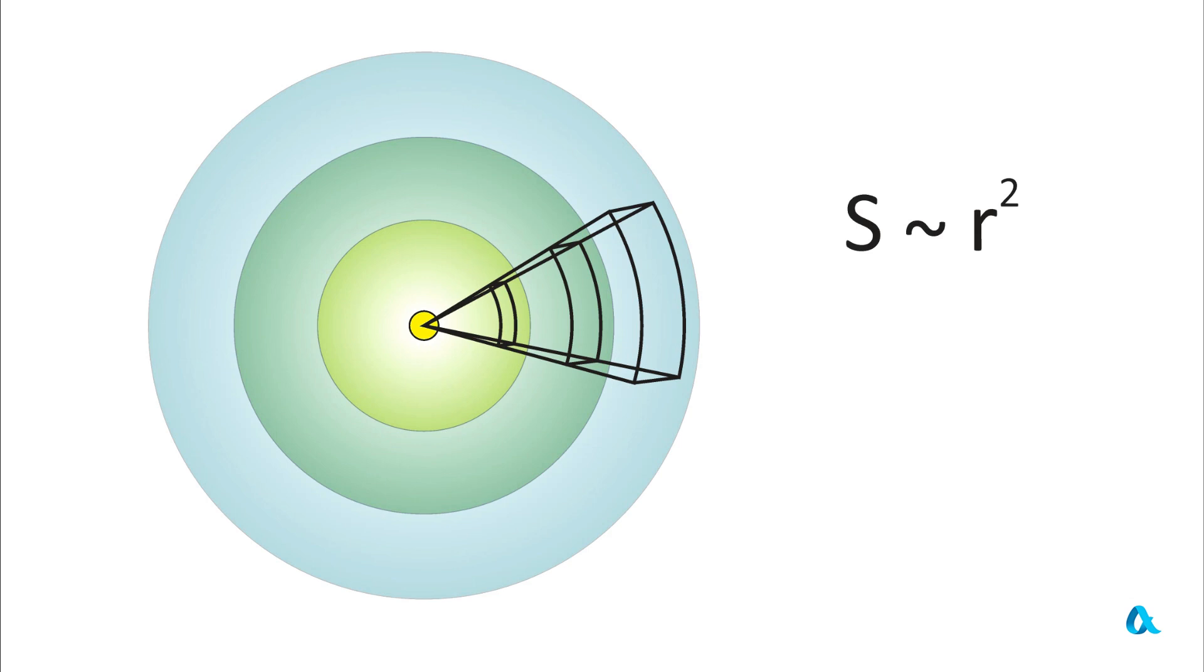Therefore, the illuminance energy per unit time per unit area will decrease inversely proportional to the square of the distance from the source.